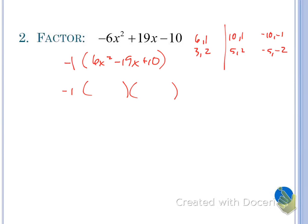To narrow down your options: when all of your factor pairs are the same sign — either both negatives or both positives — you can look at the middle term. This middle term is negative 19, so you know you're not going to use the two positive factors because two positive numbers cannot add to a negative number. So I'm not going to think about 10 and 1, or 5 and 2. I need the two negative factors. We play our game and try to find factor combinations that multiply together and then add to negative 19.